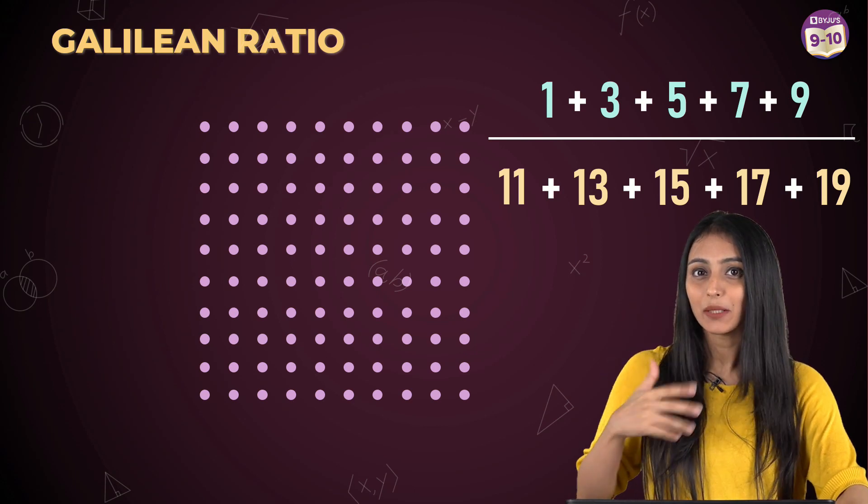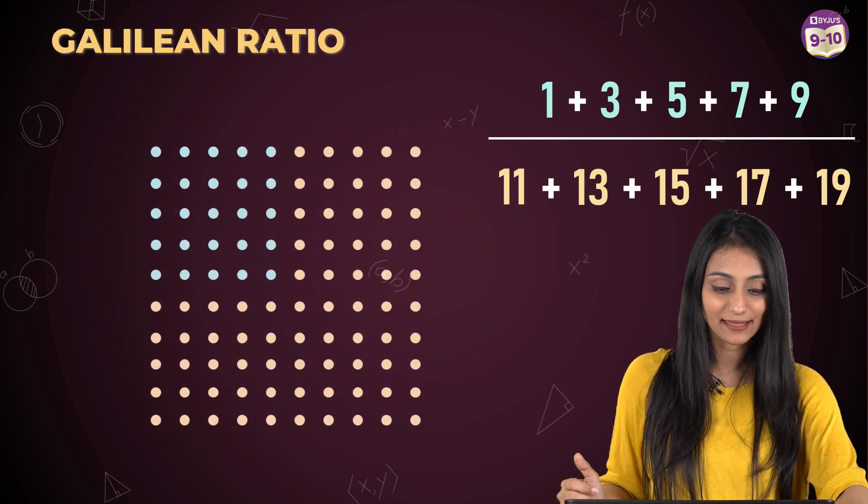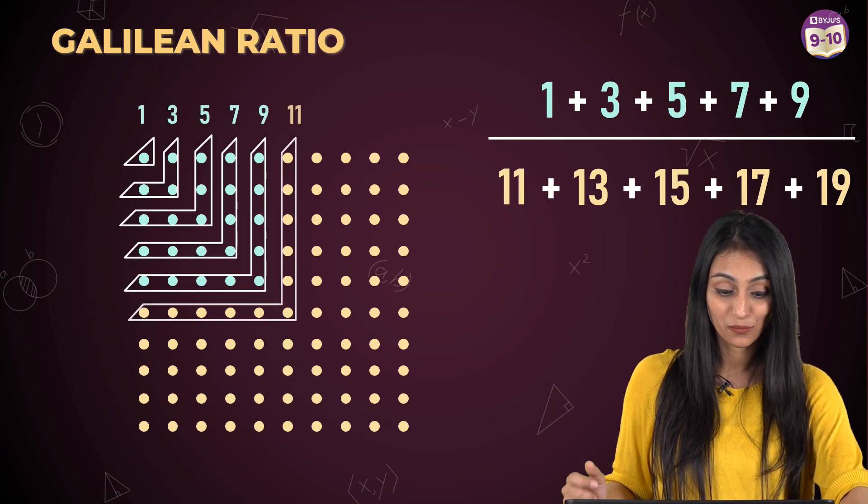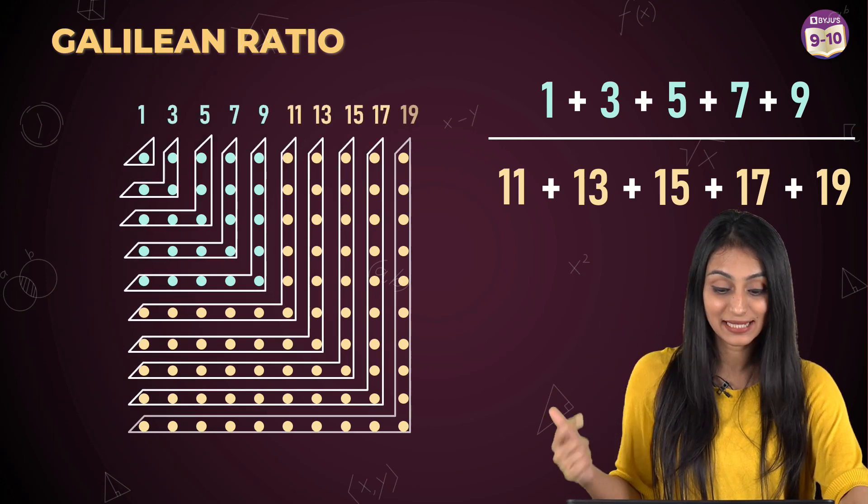let's visualize this to get a better understanding. So here I can see that the first, this is 1, 3, 5, 7 and 9 and 11, 13, 15, 17 and 19.